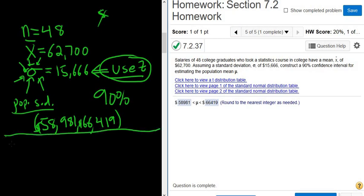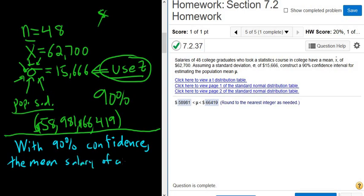Let's say you wanted to interpret this. Might as well. If you wanted to start an interpretation for this problem, you would start by mentioning the confidence level. So in this case, you would start by saying with 90% confidence. Then you have to think about what you're talking about. So we're talking about some population mean. We're talking about the population mean salary of college graduates who took statistics.